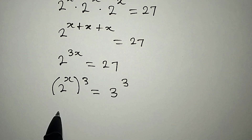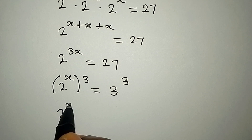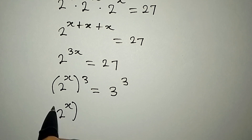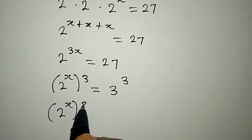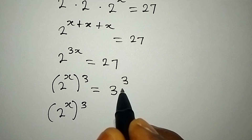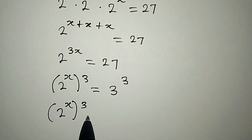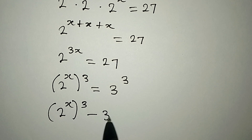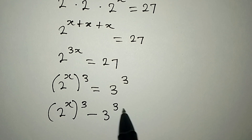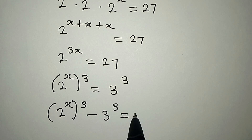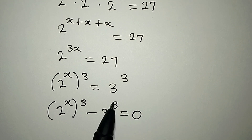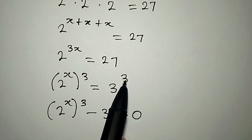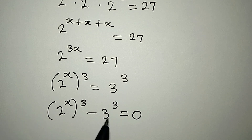So we are going to have 2 to the power of x, to the power of 3. Let's take the 3³ to the left, so we have 2 to the power of x, to the power of 3, minus 3 to the power of 3, and this is now equal to 0, because 3 to the power of 3 has moved to the left.